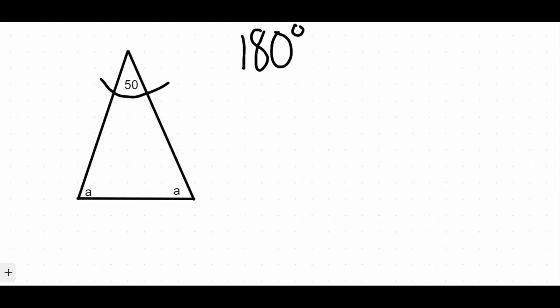So that leaves me with two angles that I need to find. So I can't just do 180 minus 50, because I need to figure out—well, if I do 180 minus 50, that's 130 degrees. So these two angles down here, both of them together, would be 130 degrees, but I need to figure out how much each one is.